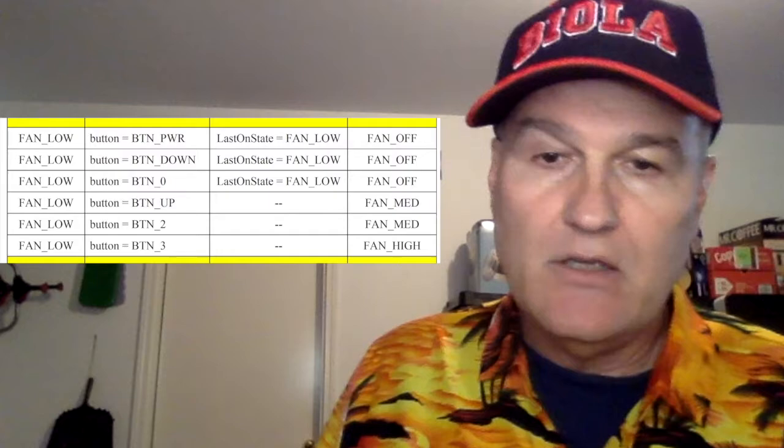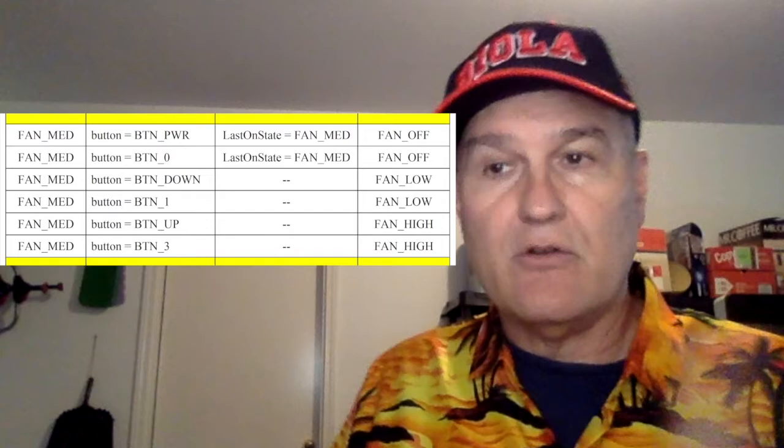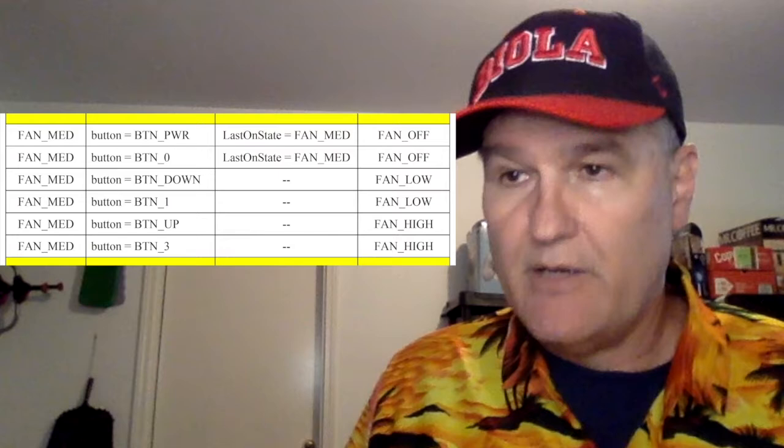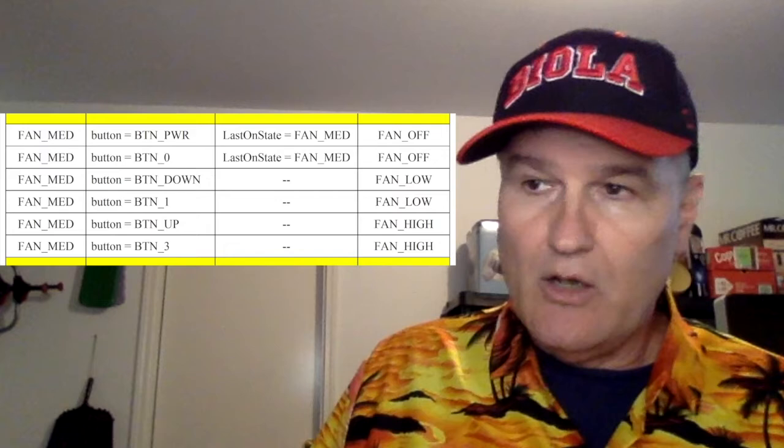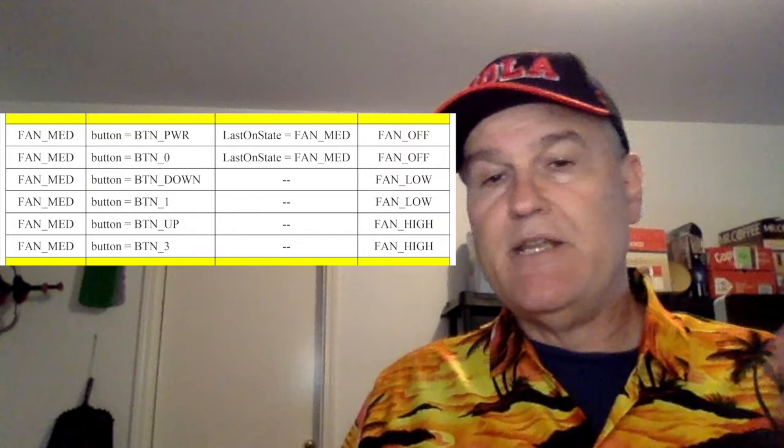Now, if you're in the medium state, what happens is you'll start to see the symmetry here. If you hit the power button, you're going to go to off. But in the last on state, you're going to remember that you were last in medium. Then, if you hit button zero, it's going to be the exact same function. Remember that I was medium, and go to off. Now, if you're in medium and you hit down arrow, you're just going to go to low. And if you're in medium and you hit button one, you're just going to go to low. And if you're in medium and you hit button up, you're going to go to high. And if you're in medium and you hit the three, you're going to go to high.